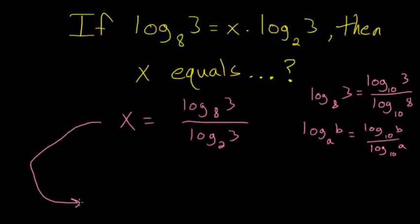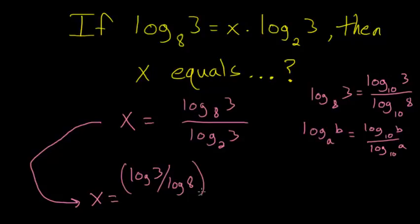So in your calculator, we can say that x is equal to log, and I'll just write the shorthand where it's implied that it's base 10. So log 3 divided by log 8, put that in first, and then divide that by the quotient of log 3 divided by log 2.